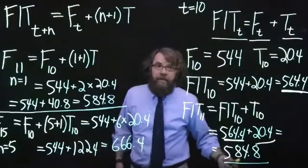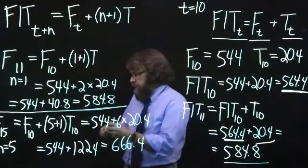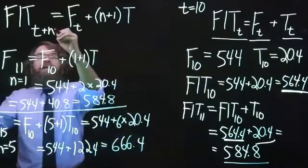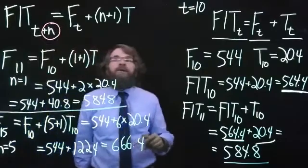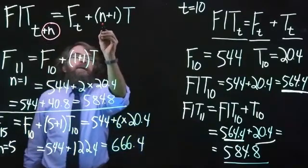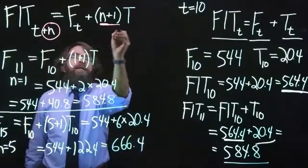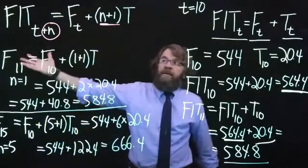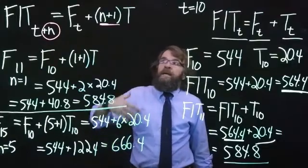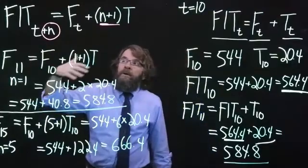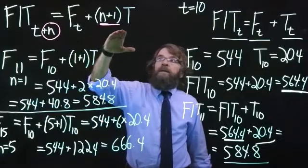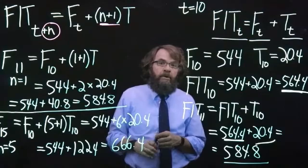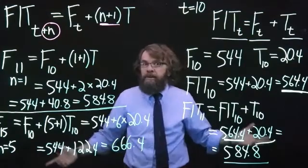But that doesn't sound like much fun. We have this formula. If we want to go additional periods into the future, we decide how many periods we want to go and add on that many more periods worth of growth. If we're going n periods into the future, we take the level plus n plus one multiples of the current trend or growth. I hope this has been helpful.